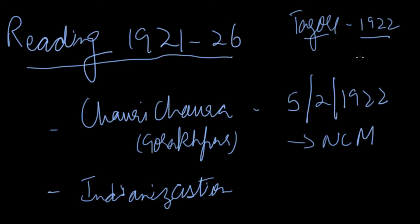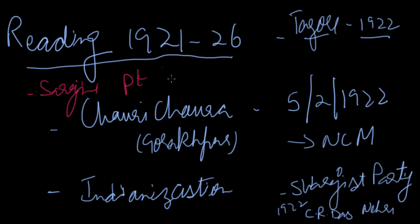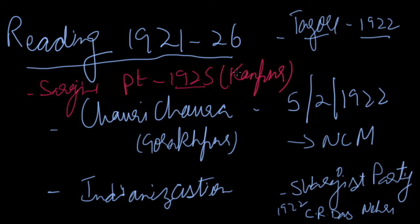The Swarajist Party was formed — C.R. Das as the president and Nehru as the secretary — in 1922. Sarojini Naidu became the president of the Congress during the time of Reading. She presided over the 1925 session, and this session was in Kanpur.